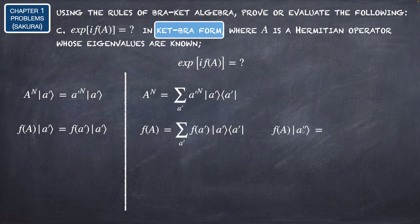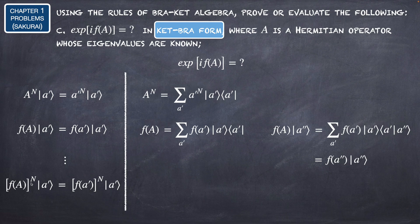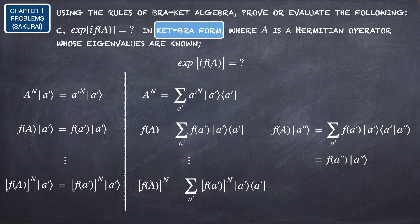We can verify this: F(A)|a''⟩ using this ket-bra form gives the summation over a' of F(a') times the inner product ⟨a'|a''⟩, which is a Kronecker delta. Since we have this summation, the result is F(a'')|a''⟩, confirming this form is correct. Similarly, for F(A)^N the eigenvalue becomes F(a')^N, and the ket-bra form is the summation over a' of F(a')^N times the projection operator |a'⟩⟨a'|.